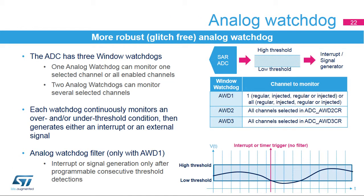Each ADC has three integrated 12-bit analog watchdogs with high and low threshold settings. The ADC conversion value is compared to this window threshold. If the result exceeds the threshold, an interrupt or timer trigger signal can be asserted without CPU intervention. When converted data belongs to the defined interval, a DMA request is generated; otherwise, no DMA request is issued. Analog watchdog 1 also has a filtering capability: if data is out of range more times than the value specified in the AWD field in the ADC XTR1 register, the AWDX flag is set and the corresponding interrupt is issued.